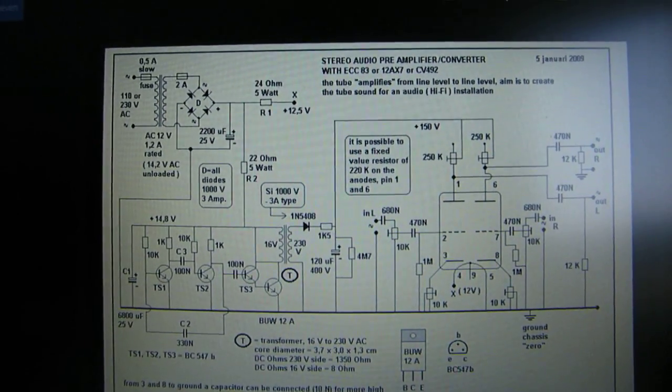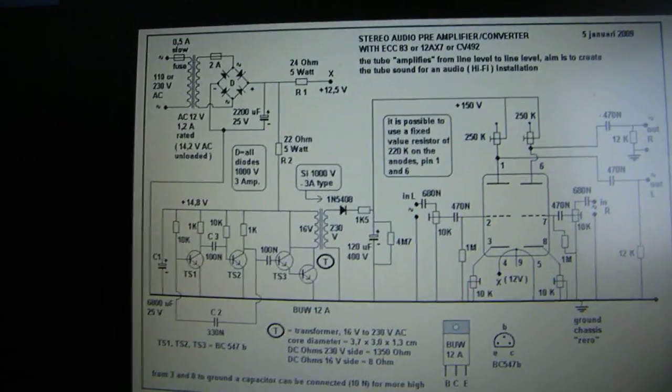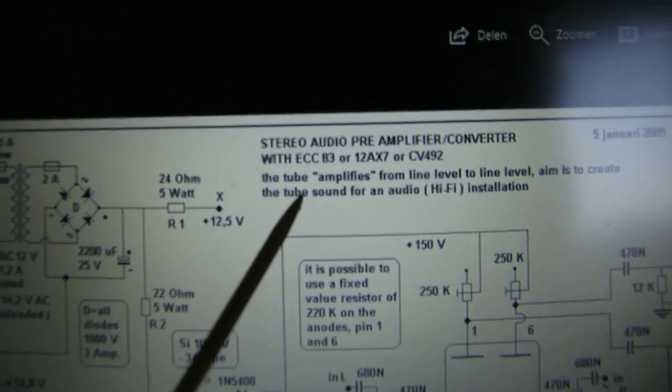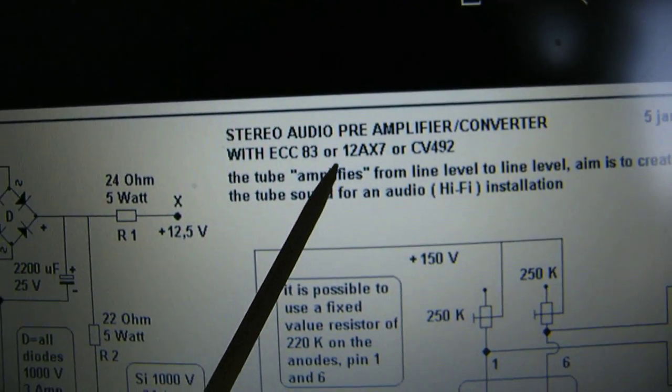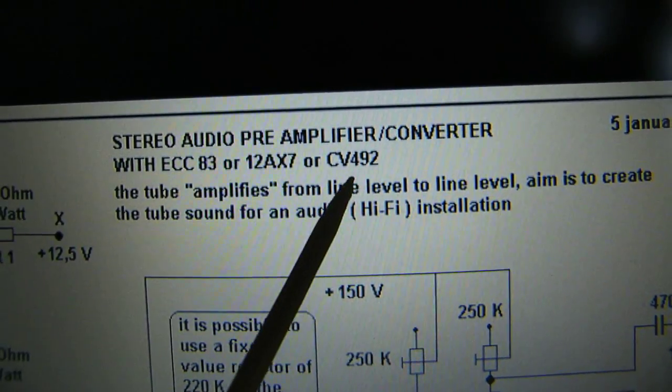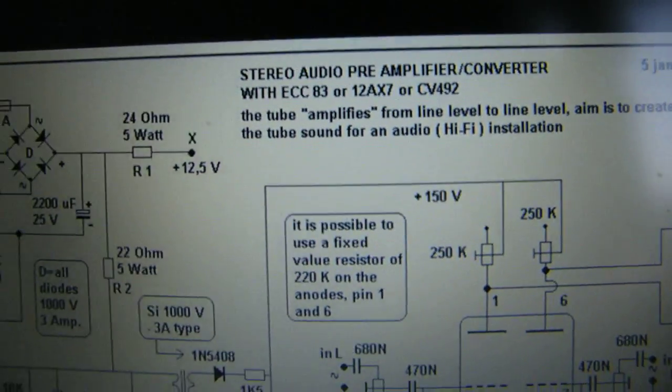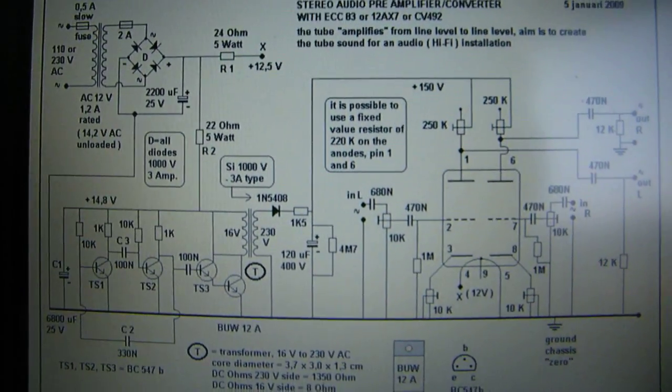A circuit from a pre-amplifier with one tube, the ECC83 or the 12AX7 or the CV492. The only aim from this circuit is to make a tube sound.